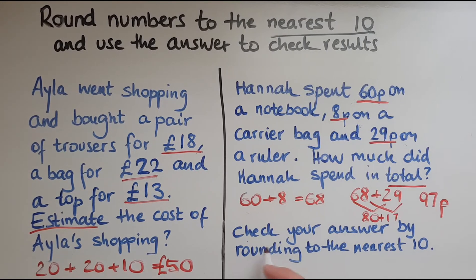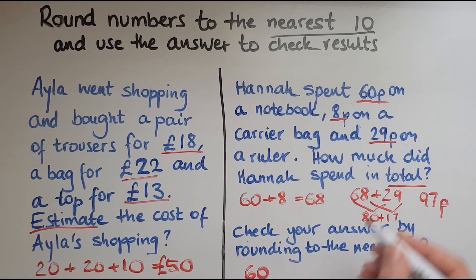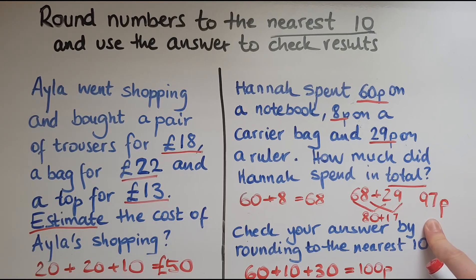Now, the next part of the question says, check your answer by rounding to the nearest 10. So I've got to round these amounts to the nearest 10 to work out the total, to check that I've got this total correct. And if I get something that is close to it, that means I've got it right. So 60 pence to the nearest 10, that is 60. 8 pence to the nearest 10, that is 10. And 29 pence to the nearest 10, that is 30. So 60 and 10 is 70 and 30 is 100. So that gives me 100 pence. And is that close to the 97 pence that we had before? It is. So that means I've checked my answer and it was right. If the answers didn't match, they were far away from each other, then I'd go back and check this again.